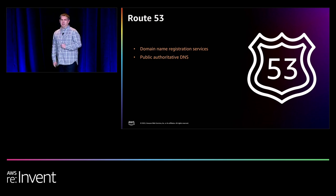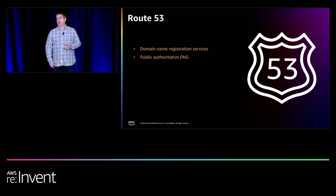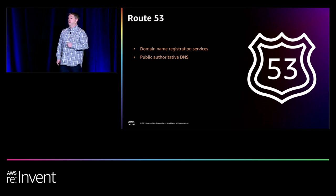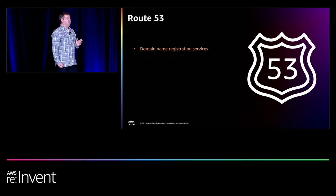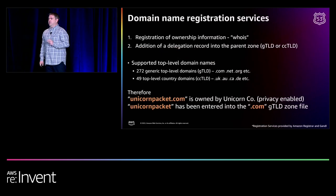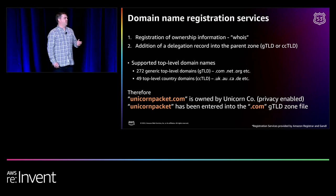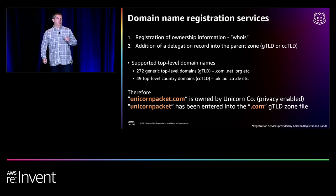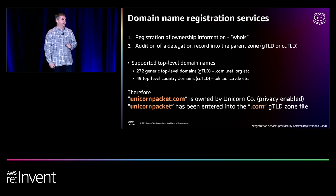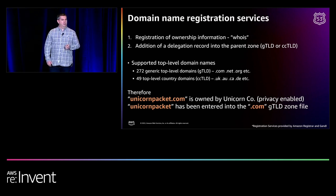So first of all, let's talk about domain name registration. There are two pieces to a domain name registration. First, you register the domain name and establish ownership — for example, we are the owners of unicornpacket.com. The second piece is the delegation — putting the entry in the zone files, like an entry in the .com zone file. We support over 200 generic top-level domains, and country code top-level domains cover pretty much all countries registered with ISO country codes.